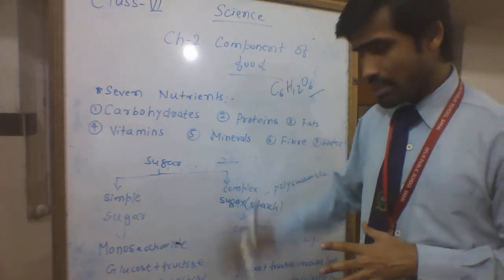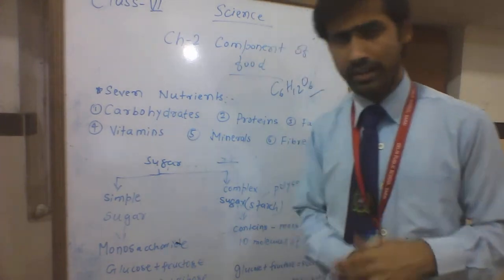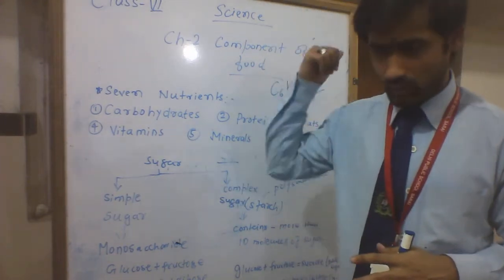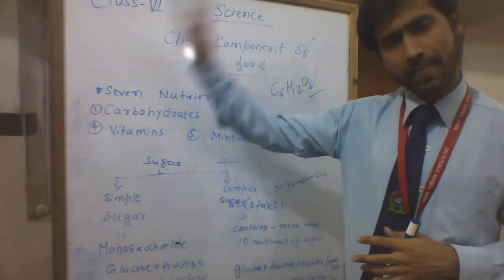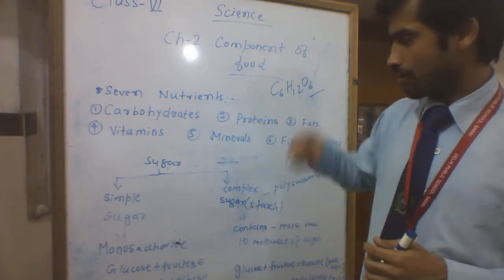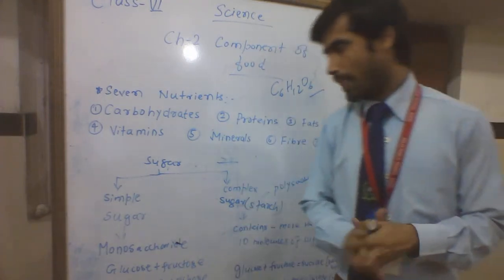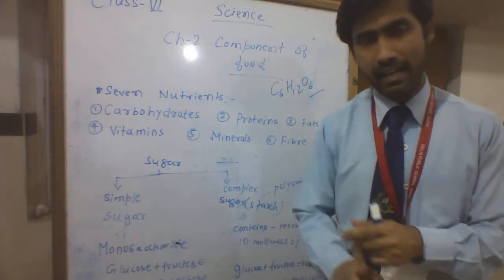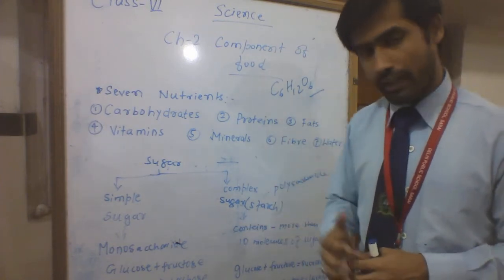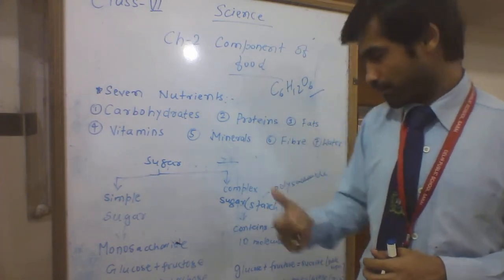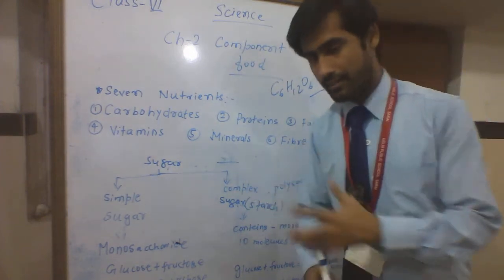Carbohydrates are divided into five types. I will tell you the names: the first one is monosaccharides, the second is disaccharides, the third is oligosaccharides, the fourth is polysaccharides, and the fifth is nucleosaccharides.